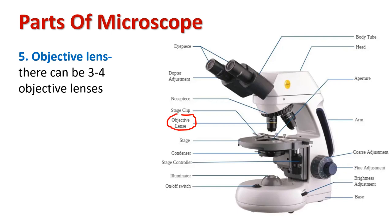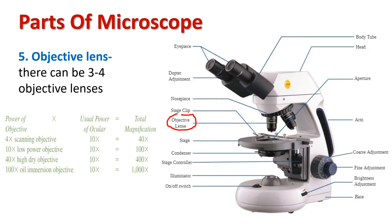There can be three or four objective lenses mounted on the nosepiece. These lenses have different magnification powers that help in a thorough and deep examination of the sample. The scanning objective gives a total magnification of 40x, the low power objective gives 100x, the high dry objective gives 400x, and the oil immersion objective lens gives a total magnification of 1000x.